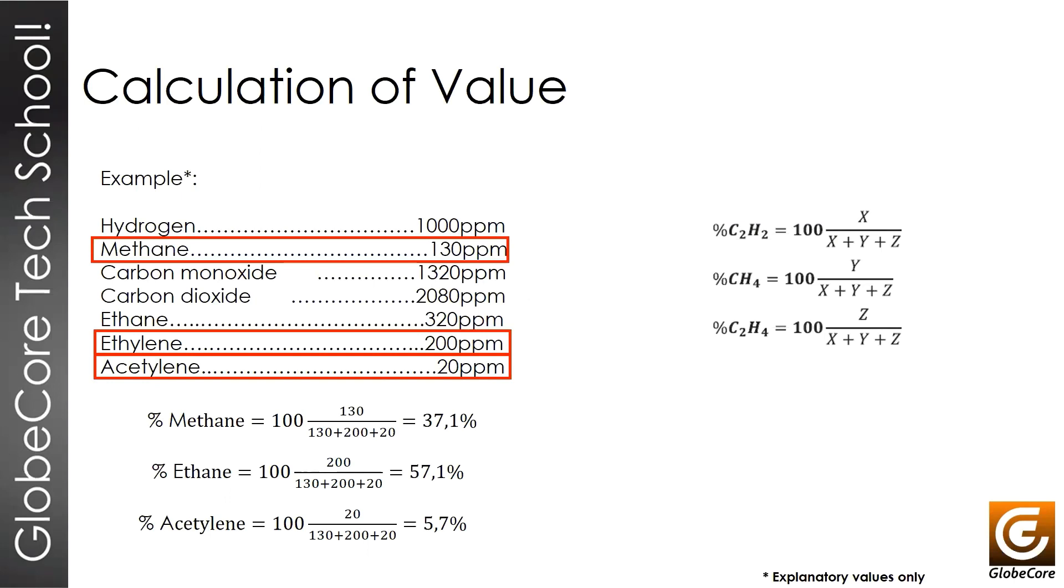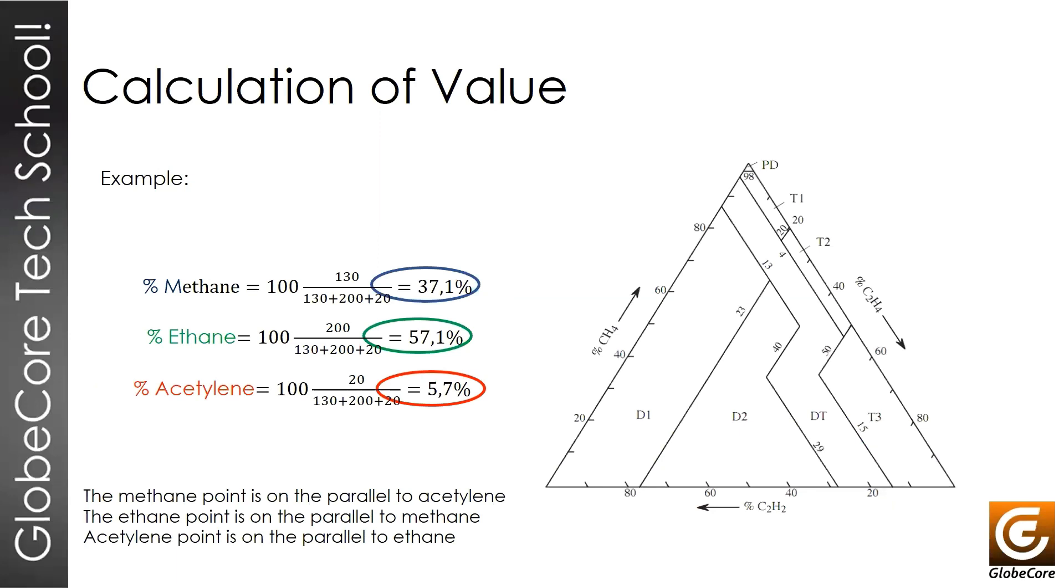When we have the correct percentages, we continue with the diagnostics and place these percentages on the triangle. We see that the concentration of methane is 37.1%. We find the corresponding point on the methane side, right there. From that point, we plot a line that is parallel to the acetylene side. This is the acetylene side at bottom, and we plot the line.